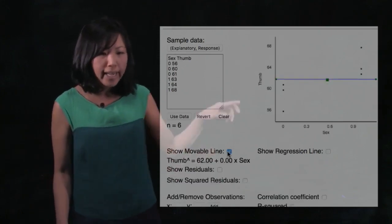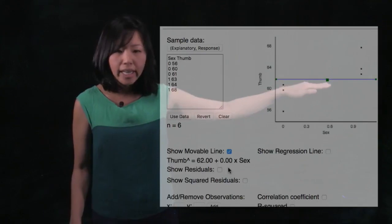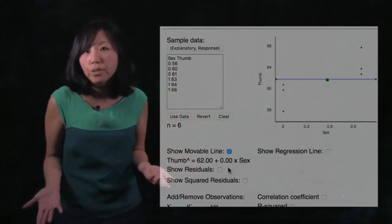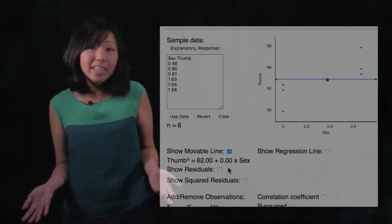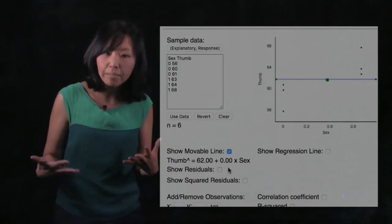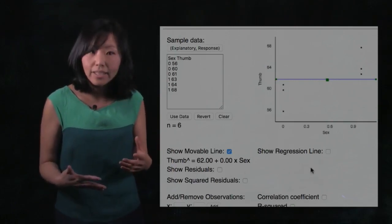And so I'm going to click movable line, and here we see the mean right here. And we're going to say, I don't care who you are, I'm just going to predict 62 for you. And that was as good as we got when we had just the empty model. But now we could improve that model a tiny bit by adding in sex.